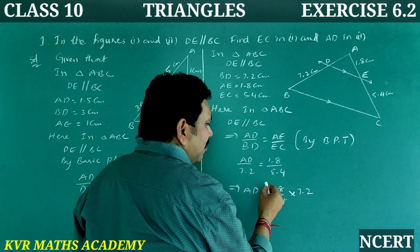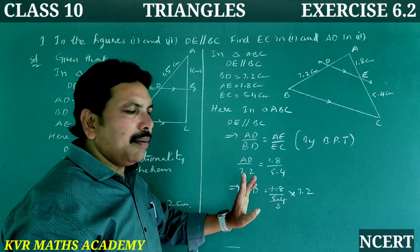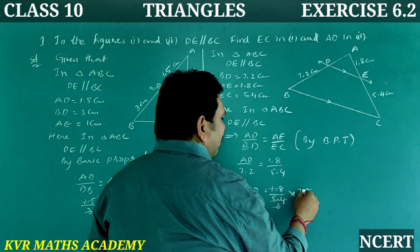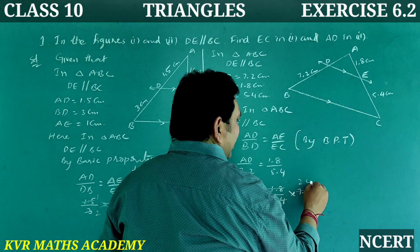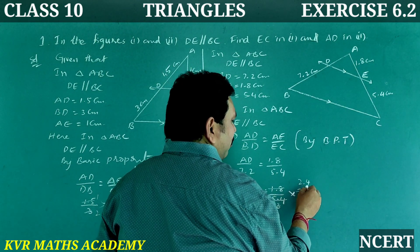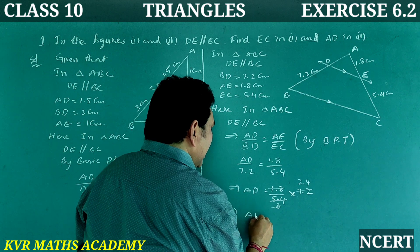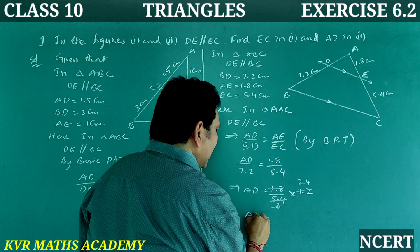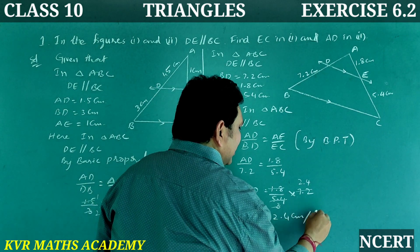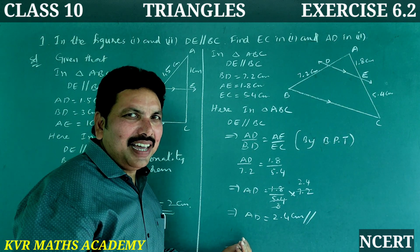1.8 times 3 is 5.4, and 3 times 2.4 is 7.2. So AD is equal to 2.4 centimeters. Have you understood clearly? Yes. Write it down.